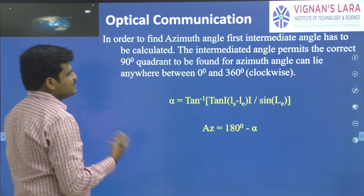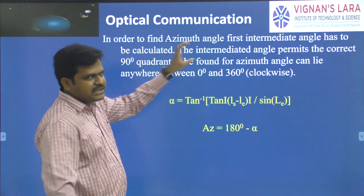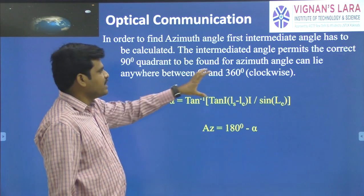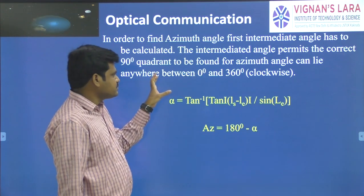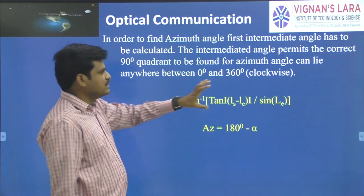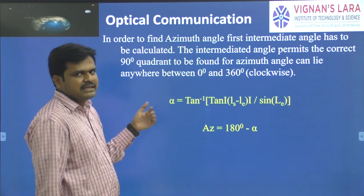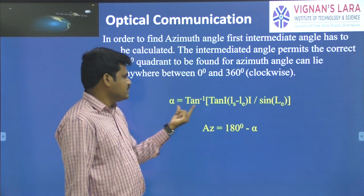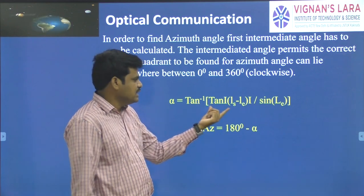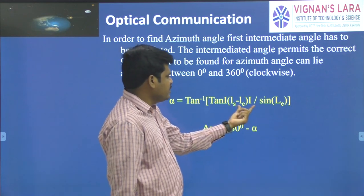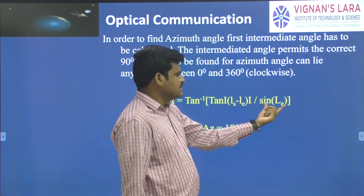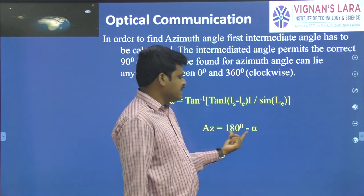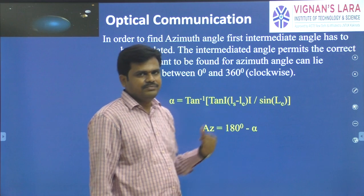The next one is the azimuth angle formula. To find the azimuth angle, first an intermediate angle must be calculated because the intermediate angle permits the correct 90-degree quadrant to be found, as the azimuth angle can lie anywhere from 0 to 360 degrees clockwise. The intermediate angle α = tan⁻¹(tan|l_s − l_e| / sin(L_e)), and the azimuth angle is then 180° − α.